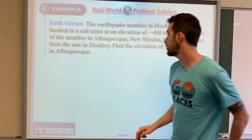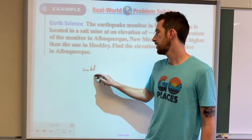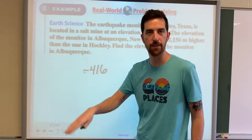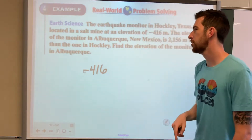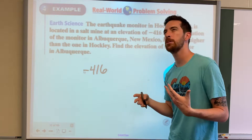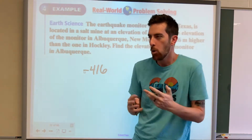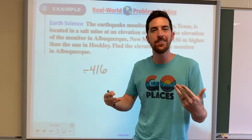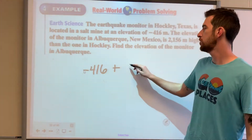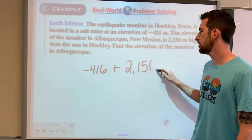Alright, so this first one is in the ground — it could just be a low valley or something, but it's negative 416. This other one is higher than that. So what operation do you think goes with 'higher' or 'more than' or 'greater than'? Addition, right? So we're going to have to add this other one, which is 2,156 meters.